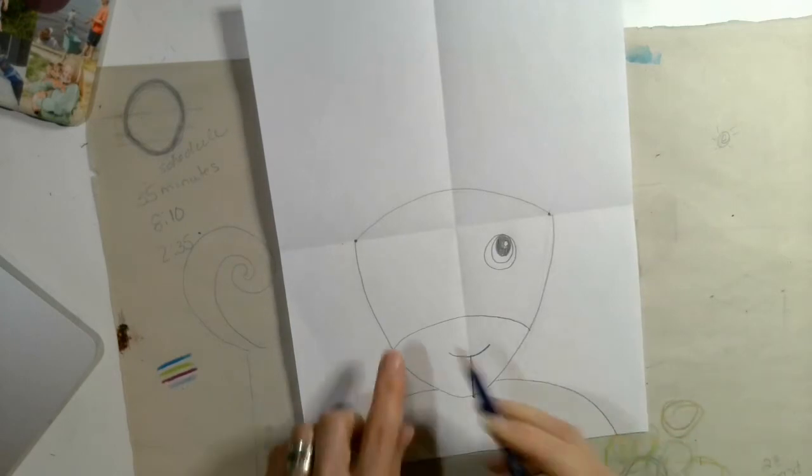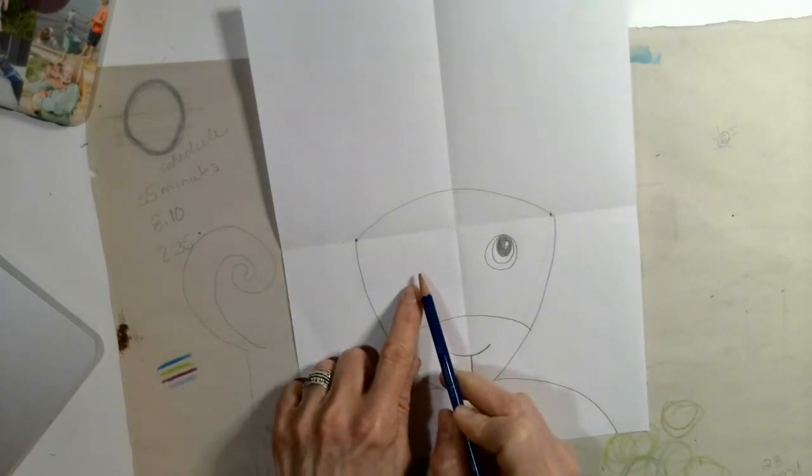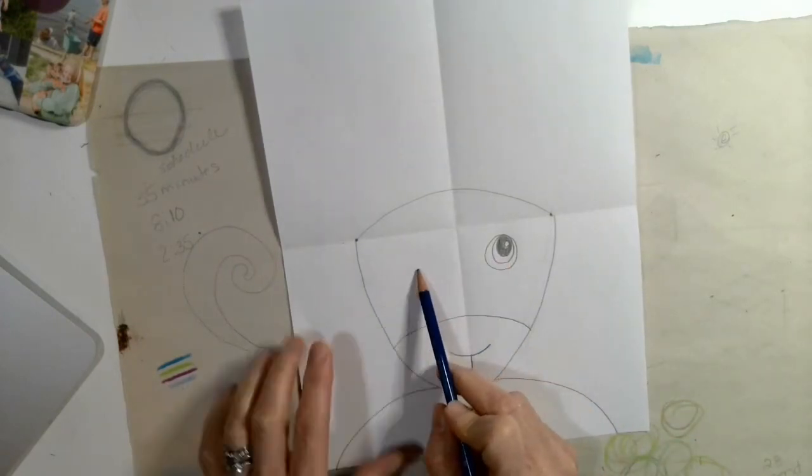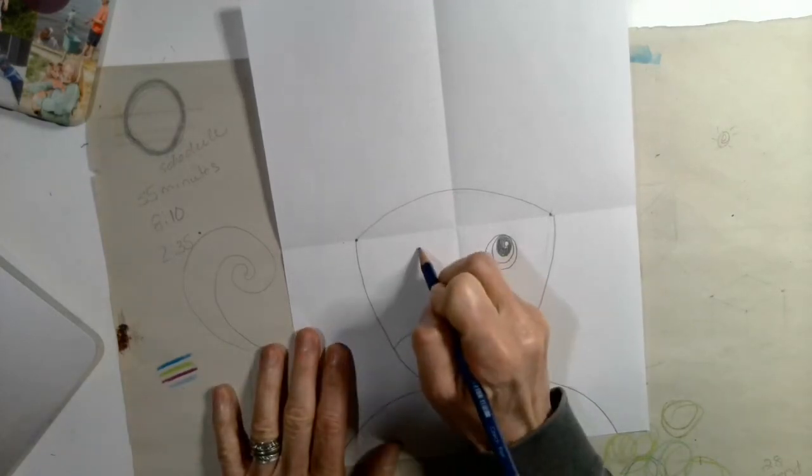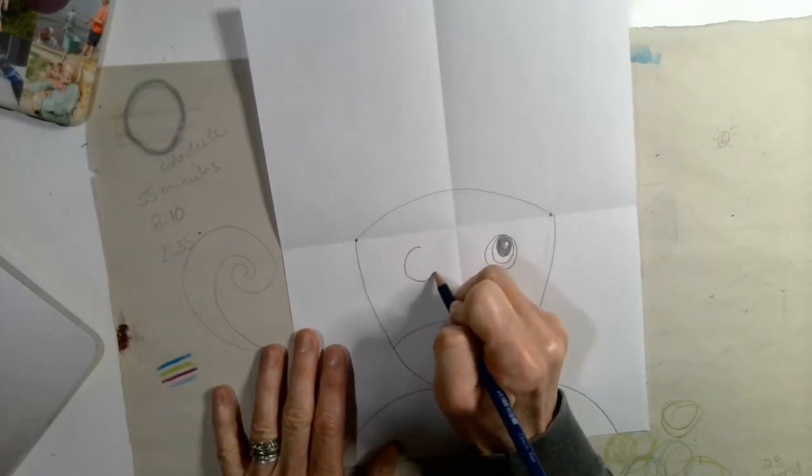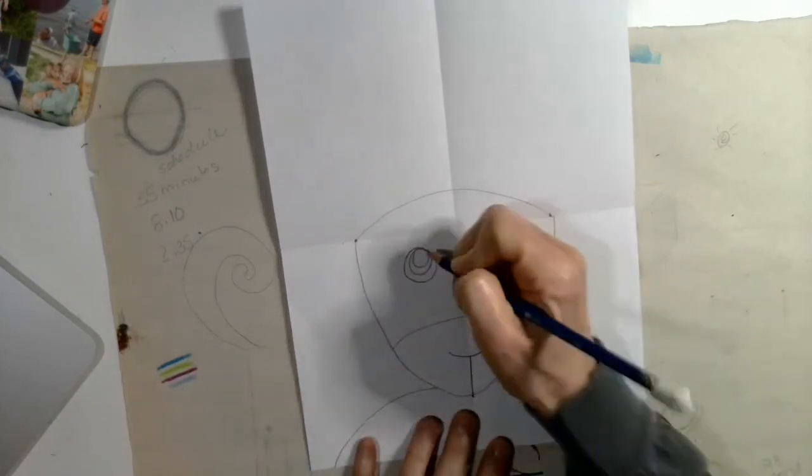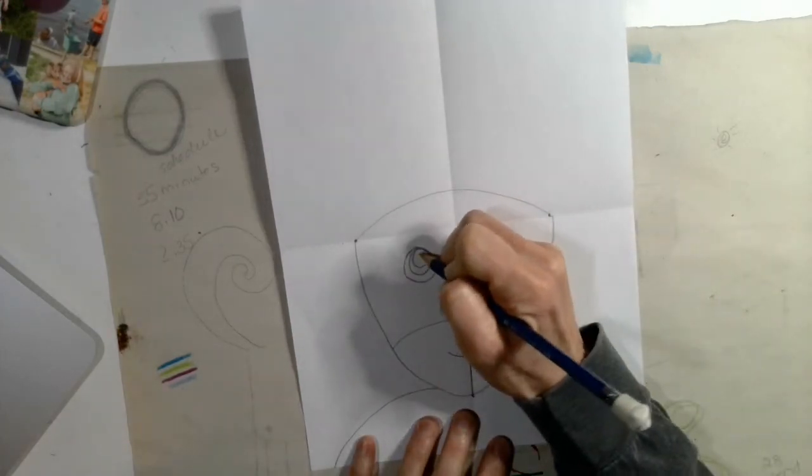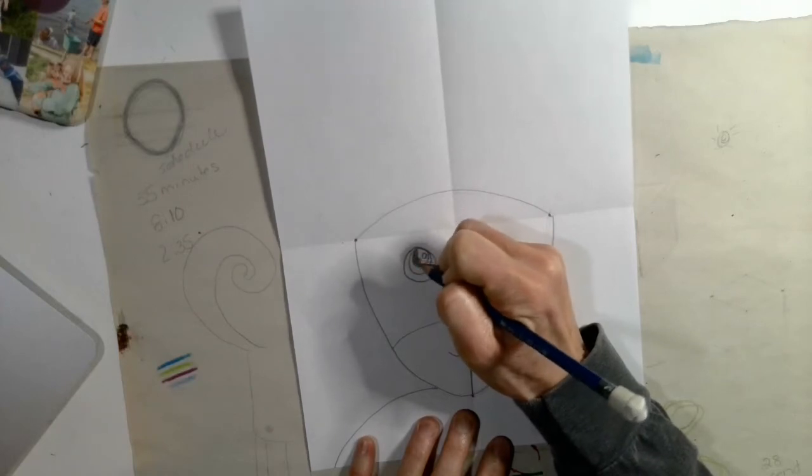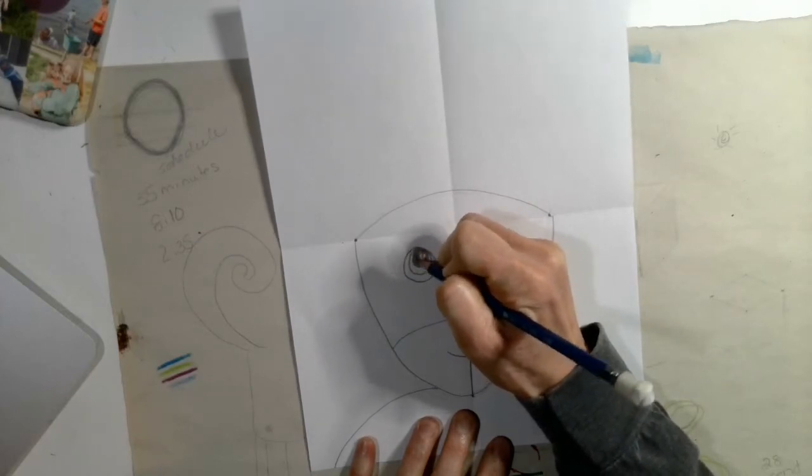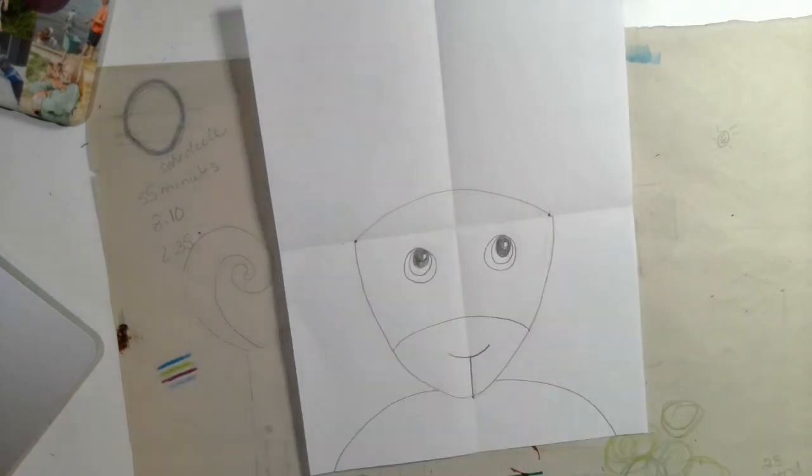Okay, so now I'm going to go over to the other side and try my best to make my eye in the same spot on the other side. But if you don't, that's okay. Alright. And there's my other eye. I'm going to give it a little highlight and I'm going to color it in. Okay, so let's look and see what we have so far. Do you know what this is yet?